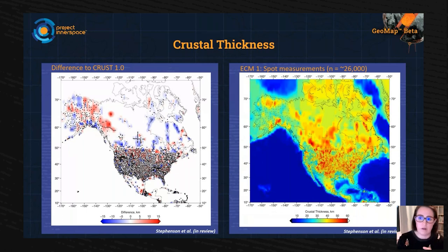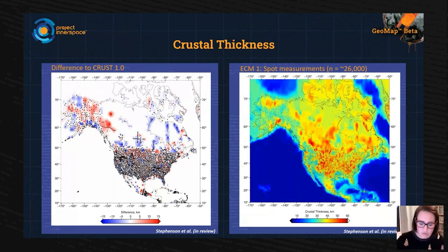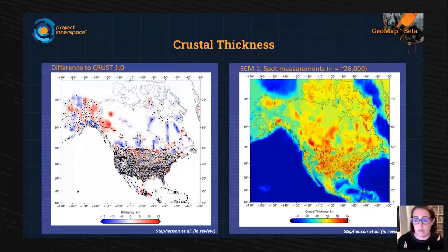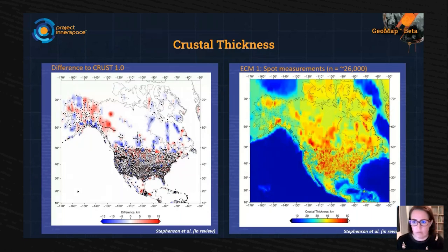To re-emphasize how vastly updated this dataset is: comparing North America between the old existing dataset called Crust1 — a very common, publicly available dataset extensively used in global heat flow models — and Simon's new ECM1, you can see variations in crustal thickness of up to 15 kilometers thicker in some places and 15 kilometers thinner in others. This 30-kilometer thickness variation has massive implications for heat flow, and we're really excited to incorporate this dataset into our work.